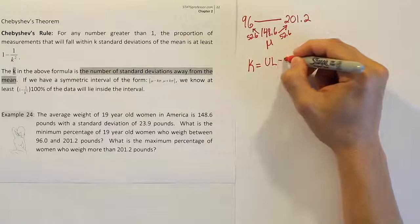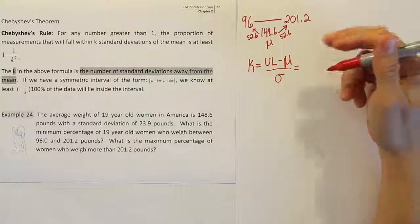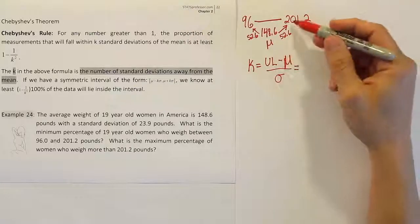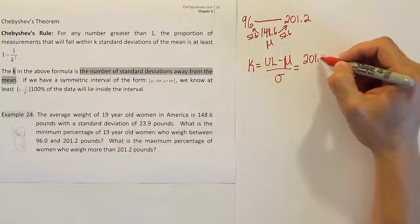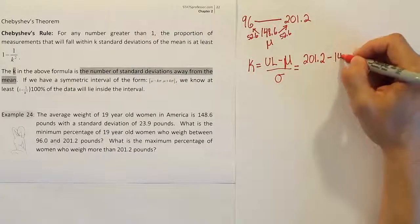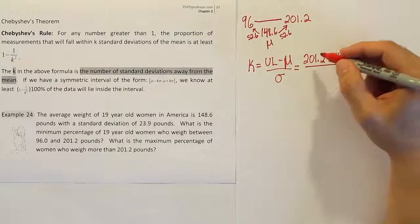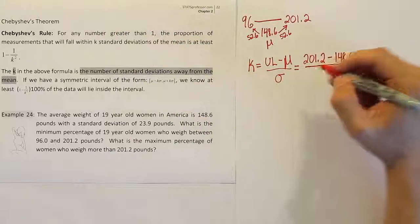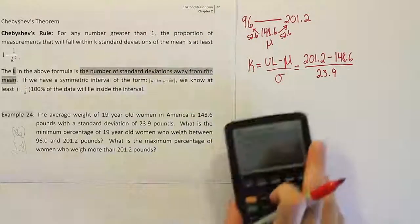So let's try to figure that out by using a formula. The formula is k equals upper limit minus the mean over the standard deviation. So the upper limit here in the problem is the 201.2. That's the higher number in the interval they gave us. Now I'm going to subtract off the mean. The mean is 148.6. And I will divide all that by the standard deviation they gave us in the problem, which is 23.9.